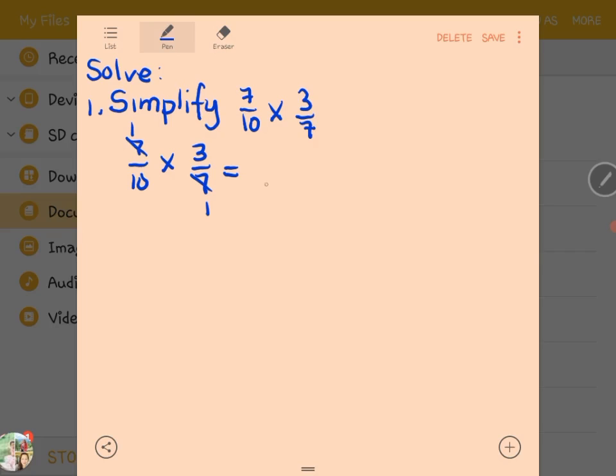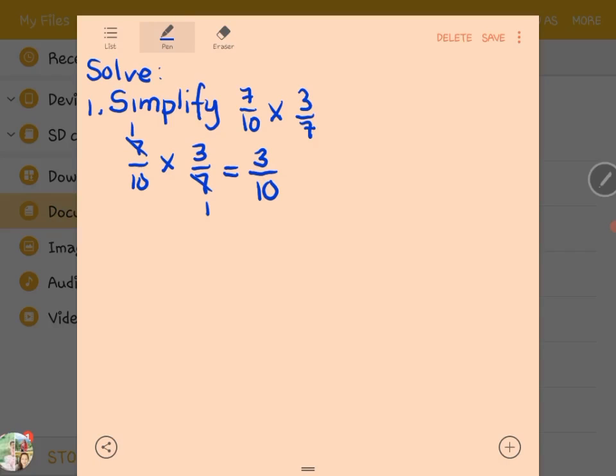Next, we have to find the product of the numerator and also the product of the denominator. So 1 multiplied by 3 is equal to 3, and 10 multiplied by 1 is equal to 10. So our answer is 3/10.